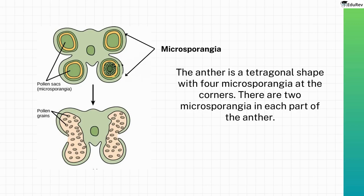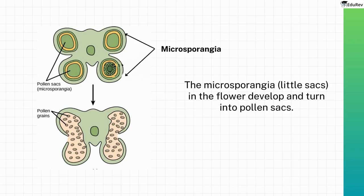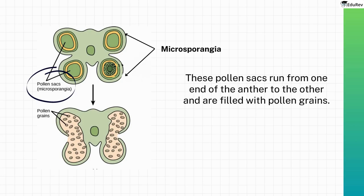There are two microsporangia in each part of the anther. The microsporangia — little sacks — in the flower develop and turn into pollen sacks. These pollen sacks run from one end of the anther to the other and are filled with pollen grains. So these little sacks are really important to study to understand the structure of the stamen from inside.